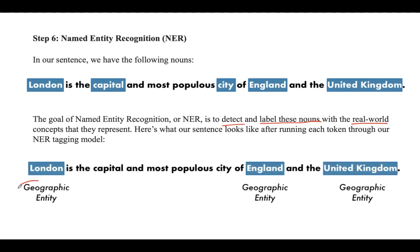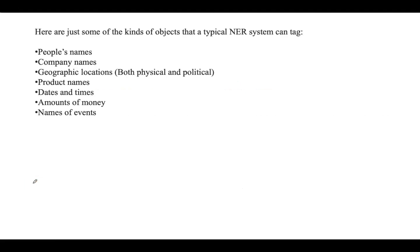You can use various kinds of entity types, such as people's names, company names, geographic locations — both physical and political — product names, dates and times, amounts of money, and names of events. Named entity recognition is one of the easiest ways to quickly get value out of the NLP pipeline.